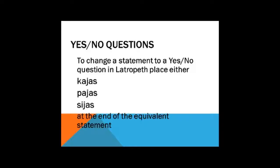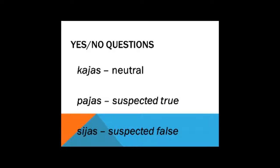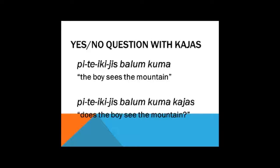Let's begin our foray with yes-no questions. To change a statement to a yes-no question in Latropath, place either kaias, paias, or sias at the end of the equivalent statement. There is a distinction between them, so we'll give some examples. Here again the statement for comparison: Pita yika yisbalum kuma, the boy sees the mountain. Now I'm going to stick kaias at the end: Pita yika yisbalum kuma kaias. That changes it into a yes-no question: Does the boy see the mountain?